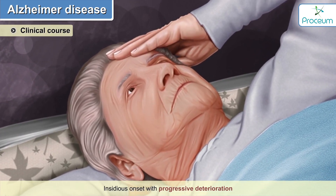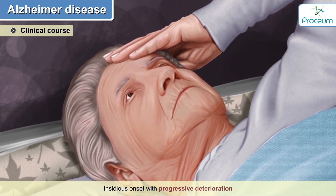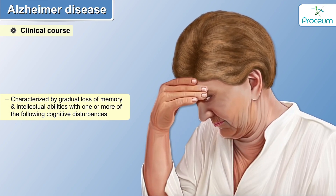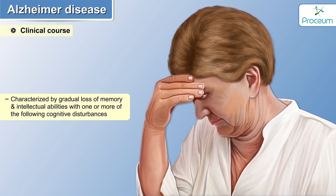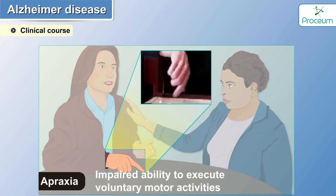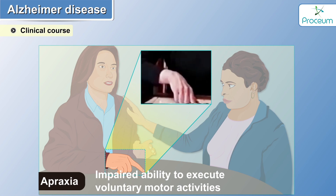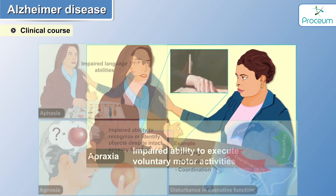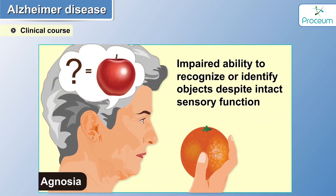Alzheimer's disease has an insidious onset with progressive deterioration, characterized by gradual loss of memory and intellectual abilities, with cognitive disturbances like aphasia — impaired language abilities — and apraxia — impaired ability to execute voluntary motor activities despite intact ability to comprehend the task and intact sensory motor function. Agnosia can also be seen, which is an impaired ability to recognize or identify objects despite intact sensory function.